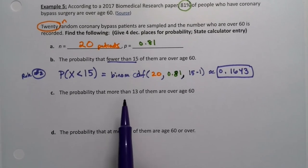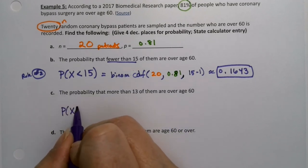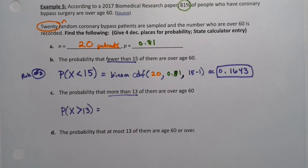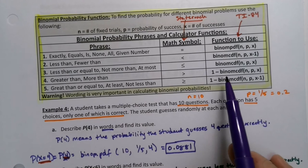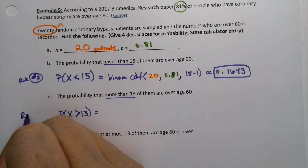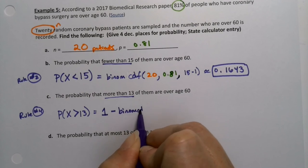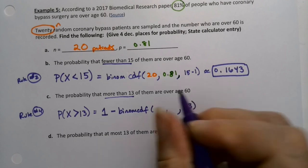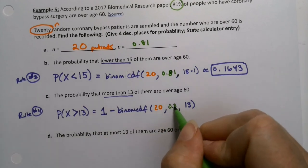Next: the probability that more than 13 of them are over age 60, so P(X > 13), greater than 13. Looking at the rules list, more than is greater than — that's Rule 4. So we want one minus binom CDF with n, p, x. Write down Rule 4: one minus binom CDF. The n=20 and p=0.81 stay consistent throughout the whole problem.